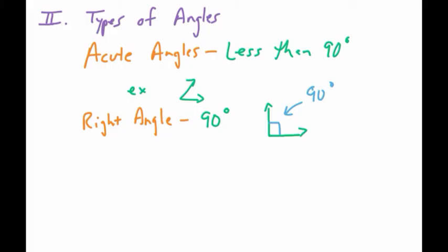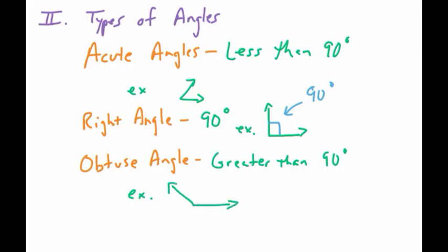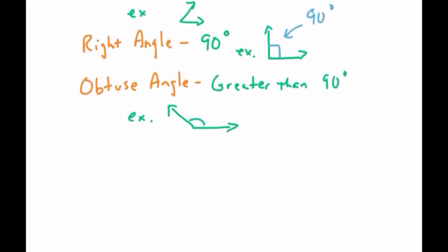So we have acute less than 90, we have right angles, those are 90. Now we want to do the ones that's greater than 90, so that'll be an obtuse angle. And obtuse angles now are going to be greater than 90 degrees. So if you wanted to do an example of an obtuse angle, that would look maybe something more like this. This angle here now is going to be larger than 90 degrees. Those are the three main ones.